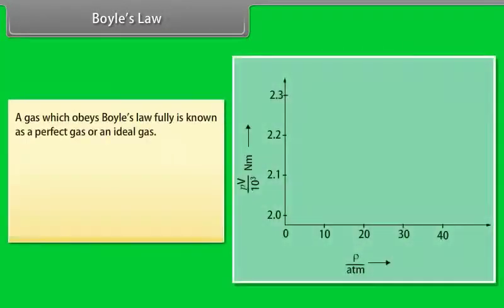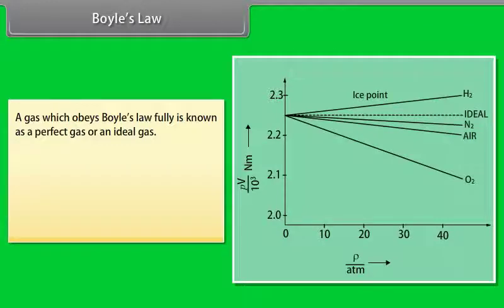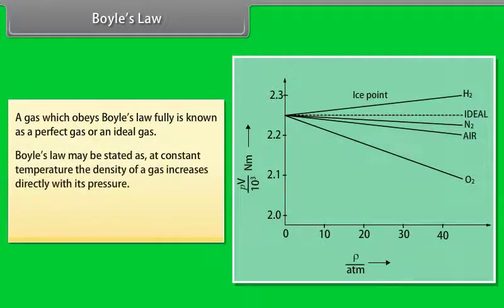A gas which obeys Boyle's law fully is known as perfect gas or an ideal gas. Boyle's law may be stated as: at constant temperature, the density of a gas increases directly with its pressure. P over rho equals constant.